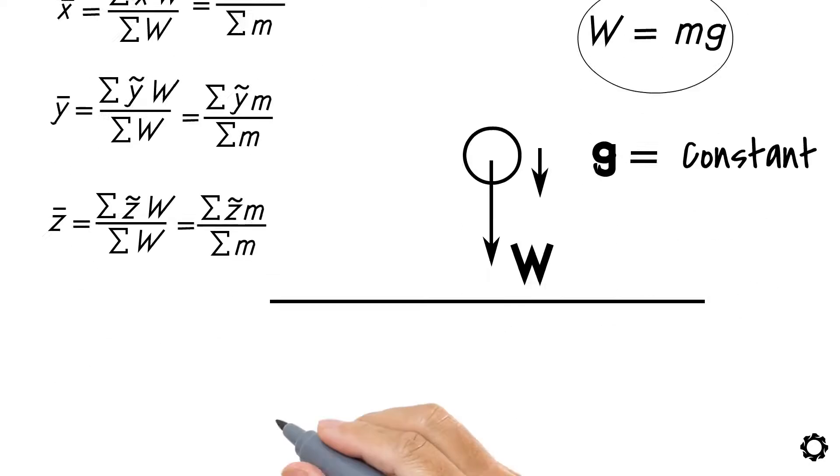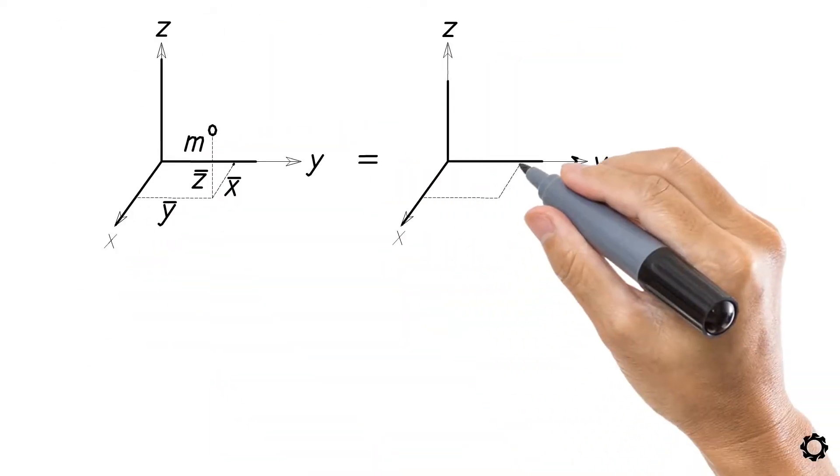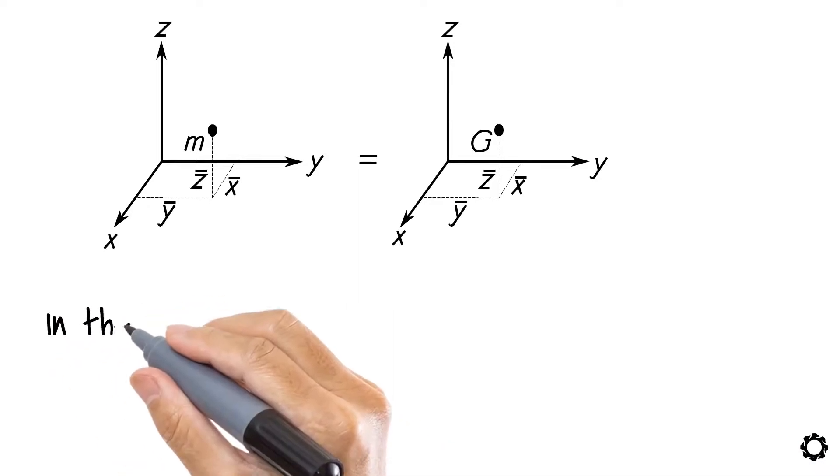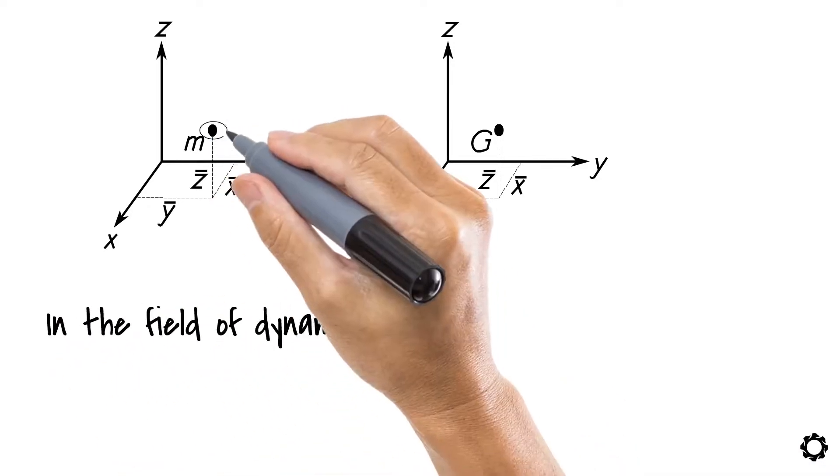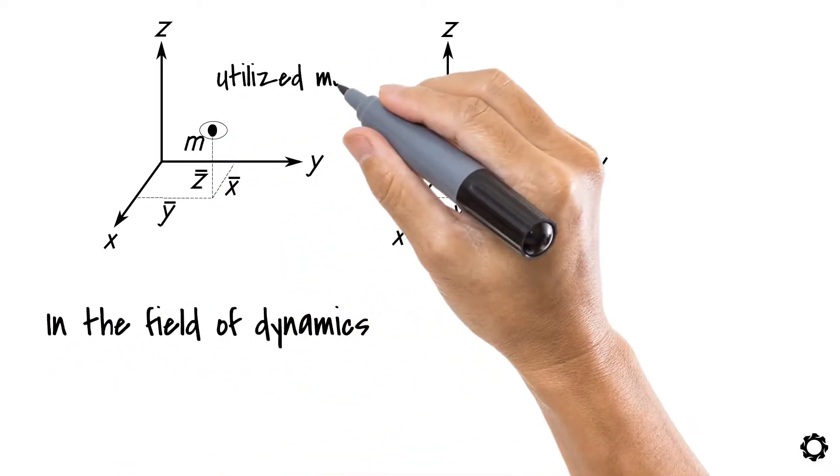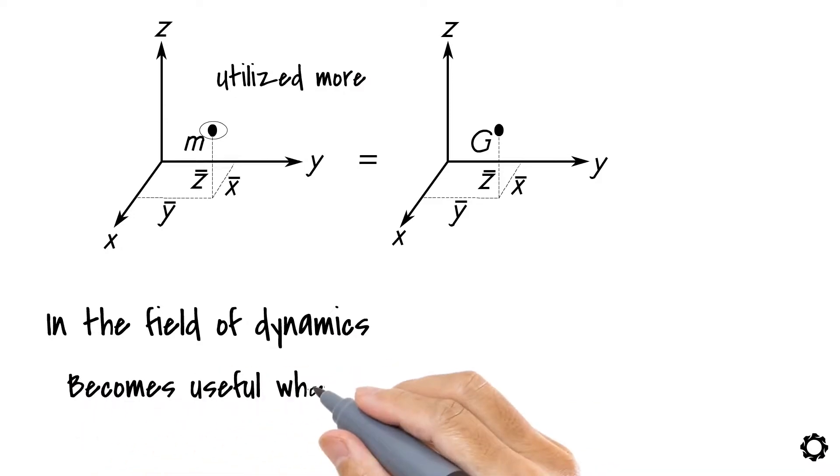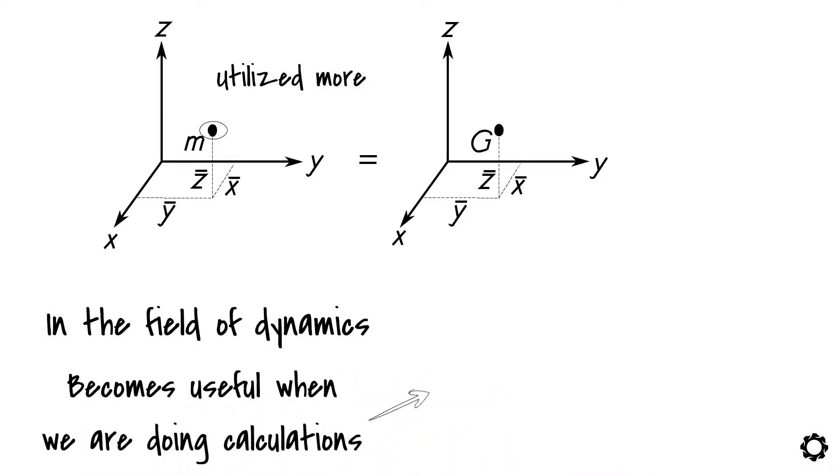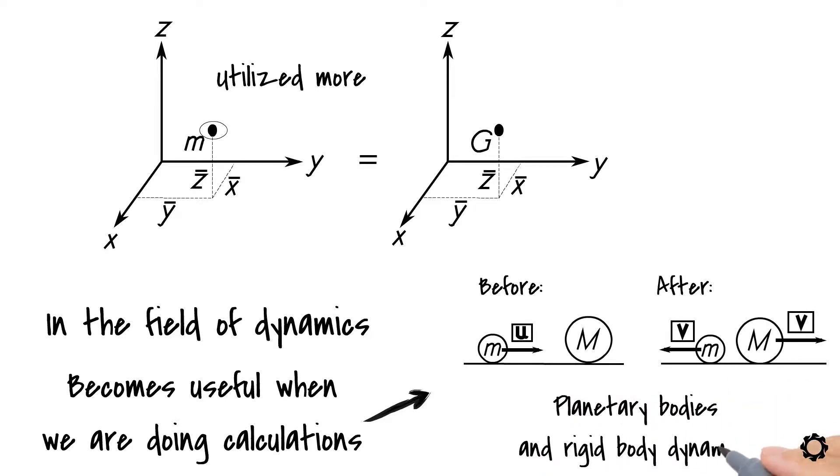As you can see, the location of the center of mass is coinciding with the center of gravity. In the field of dynamics, the center of mass is usually utilized more, because it becomes useful when we are doing calculations related to, for instance, linear and angular momentum of planetary bodies and rigid body dynamics.